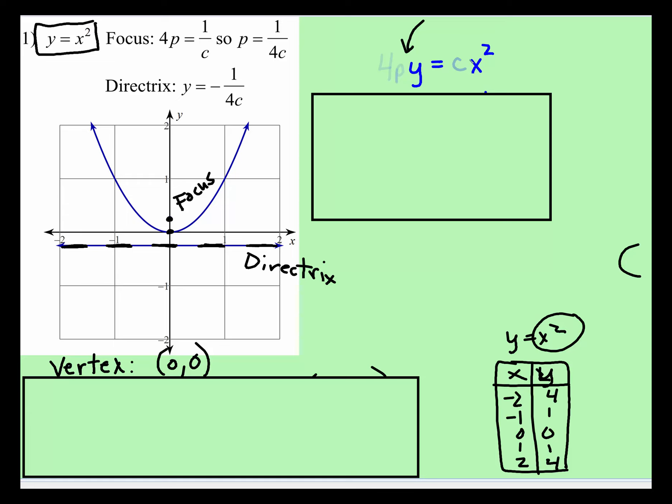y is equal to, c is just the coefficient, so in this case that invisible 1, that's the c value, c times x squared. This is what you do, you take that 4p, and set it equal to the reciprocal of c,